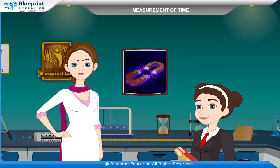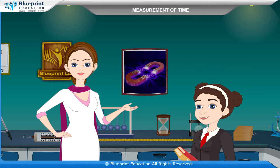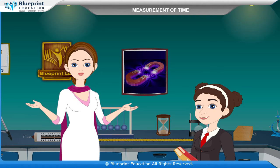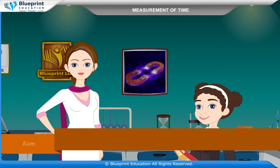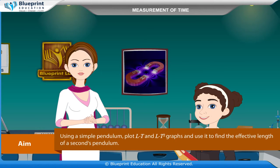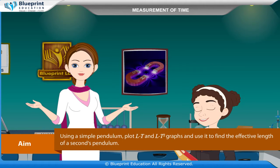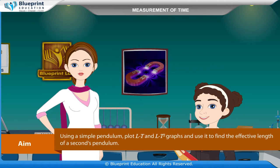By using a simple pendulum, plot L-T and L-T-square graphs and use it to find the effective length of a seconds pendulum.